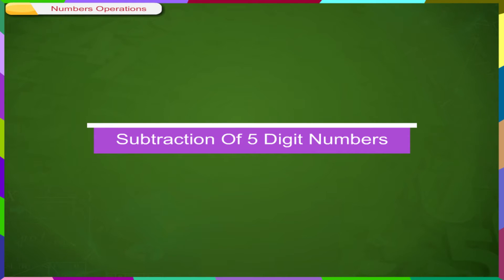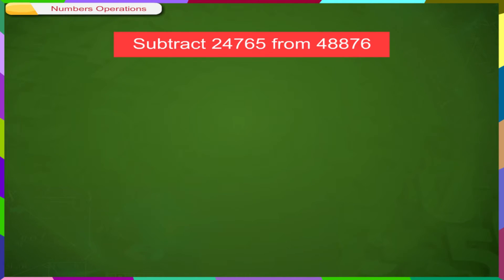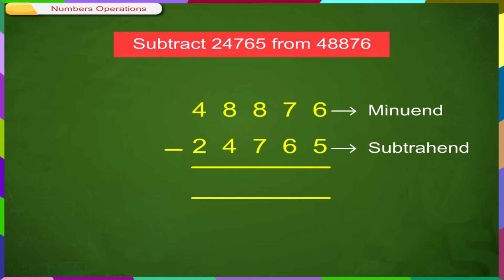Subtraction of 5-digit numbers. Subtract 24765 from 48876. Arrange the digits of the minuend and subtrahend in place value columns and subtract as usual.